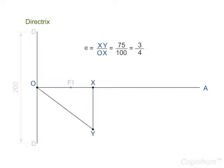Then we shall join line OY. From focus F1 draw a line at an angle of 45 degrees to meet the line OY at M. From M draw a line perpendicular to intersect the axis OA at V1.